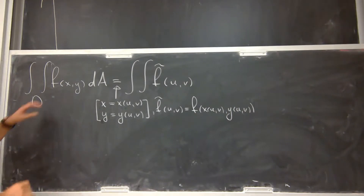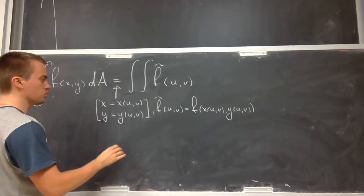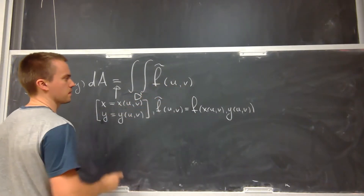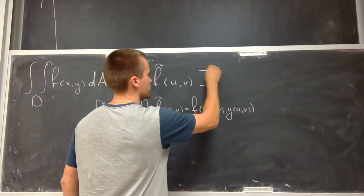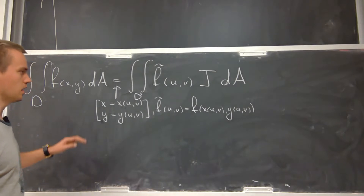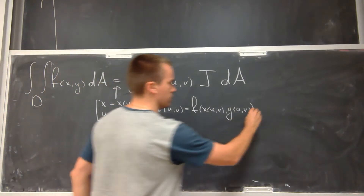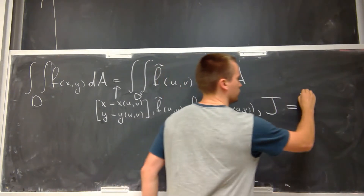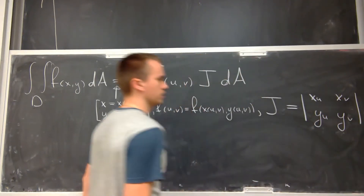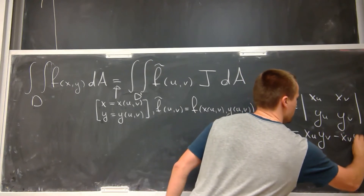Since I changed the region, and the original domain is defined for variables x and y, I'm going to have a new domain — let's call it D-prime — in terms of u and v. Here I will have the Jacobian times dA. The Jacobian is the determinant of partial derivatives of x and y with respect to u and v: J equals x_u times y_v minus x_v times y_u.